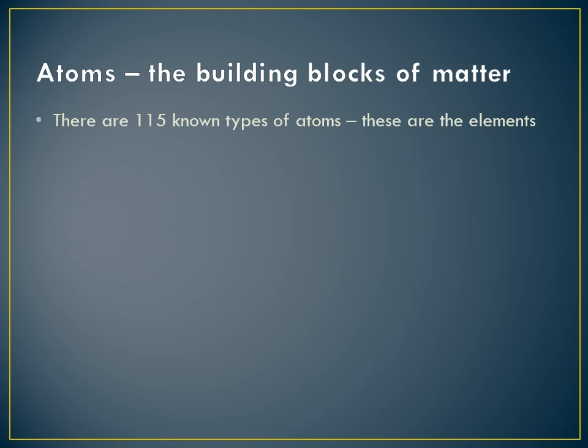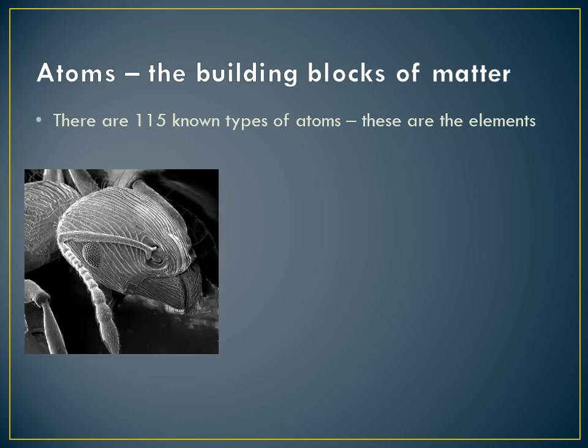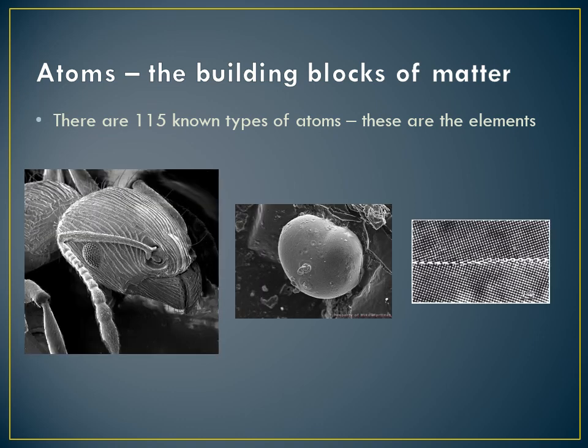You've probably learned in a previous science class about atoms, which are basically the building blocks of all matter. So far scientists know of 115 types of atoms, and we call these the elements. The elements combined together in different ways.